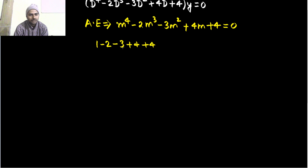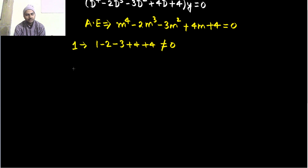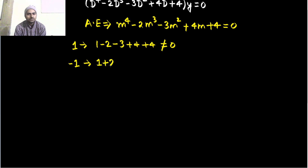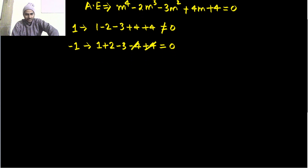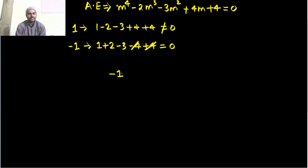So it is 8 plus 1 — 9 minus 5 — not working, this is not equal to 0. I have checked for 1. Let us check for minus 1 then, so this will be 1 plus 2 minus 3 minus 4 plus 4 minus 4 plus 4 getting cancelled, 3 minus 3 — yes this is equal to 0. So I have got my first root which is minus 1. Let us use the synthetic division method.